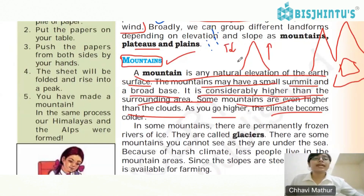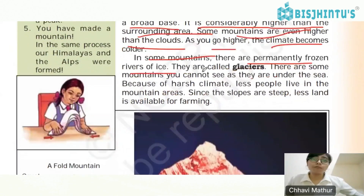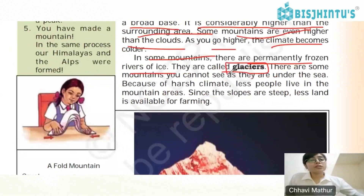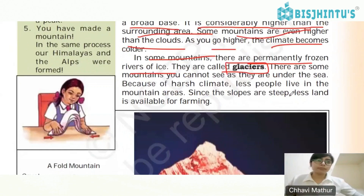The temperatures are very cool in mountains. In some mountains there are permanently frozen rivers of ice called glaciers. In the previous lecture, glaciers were shown — these are rivers that are completely frozen.